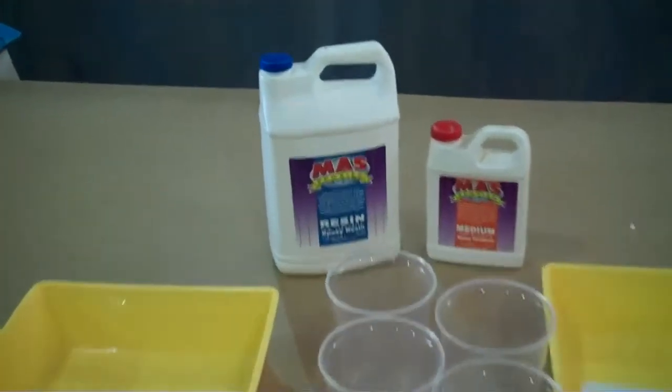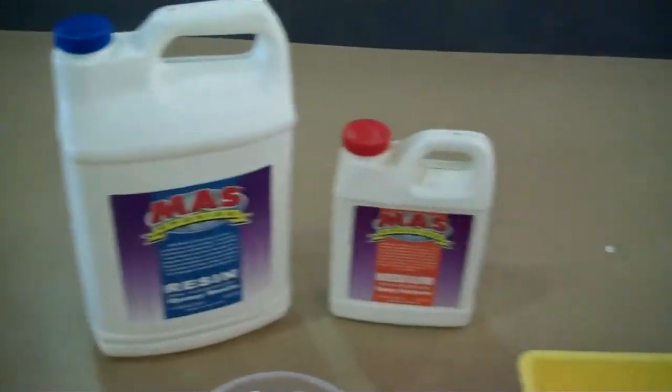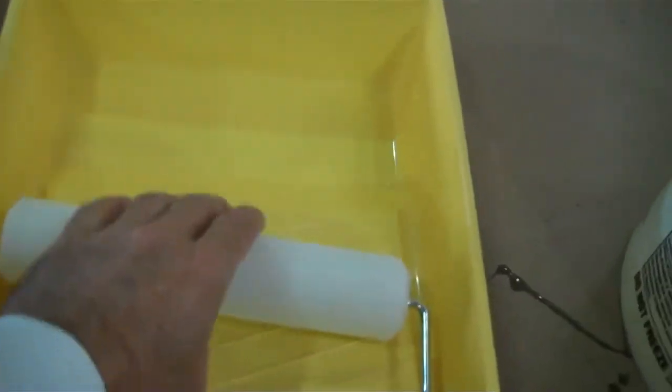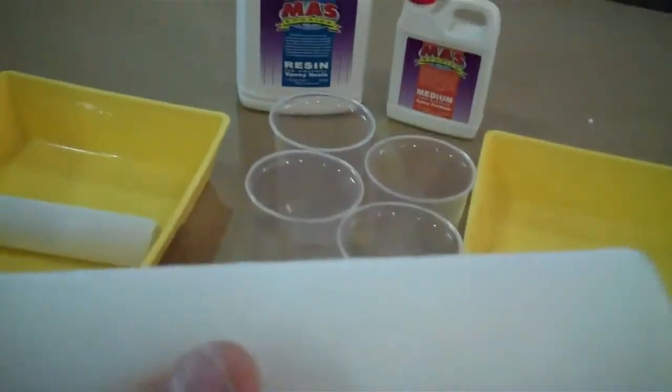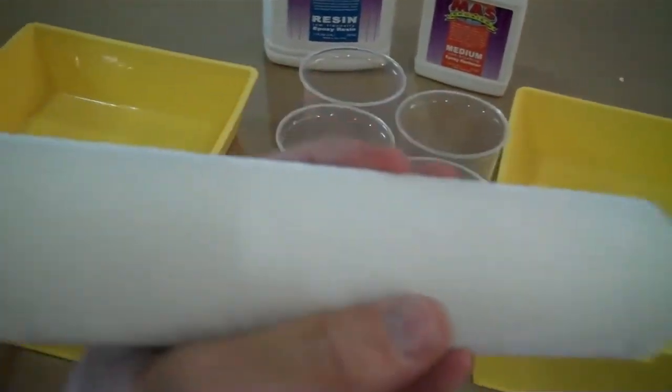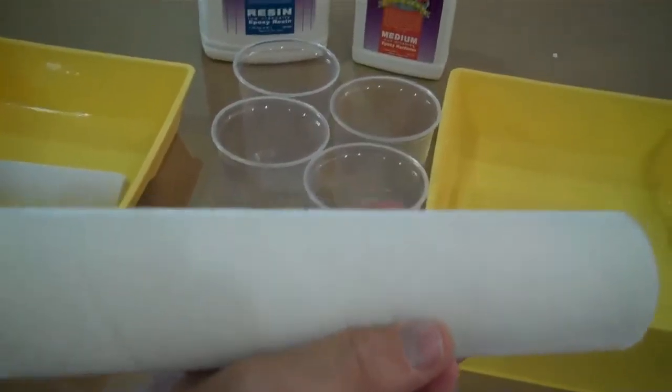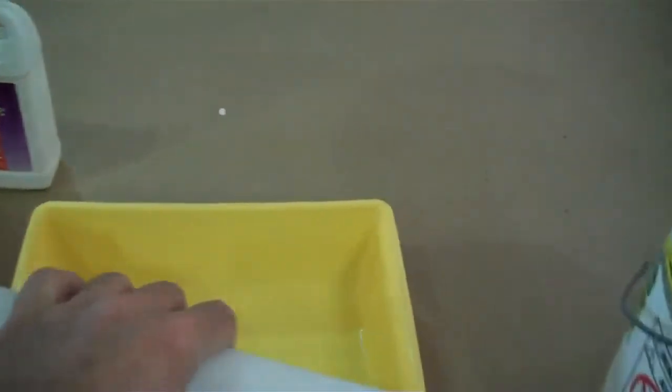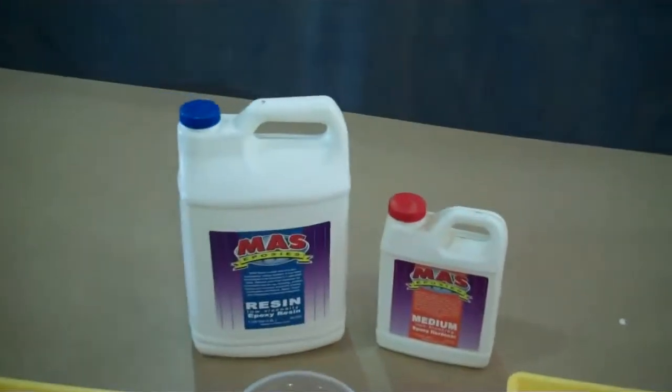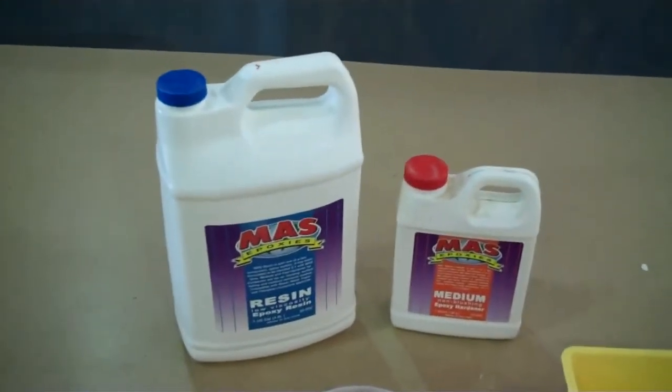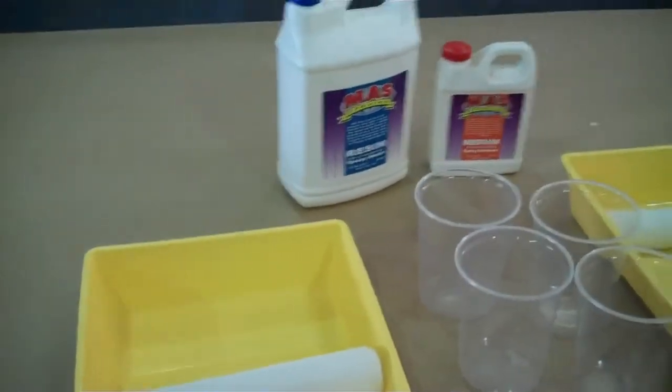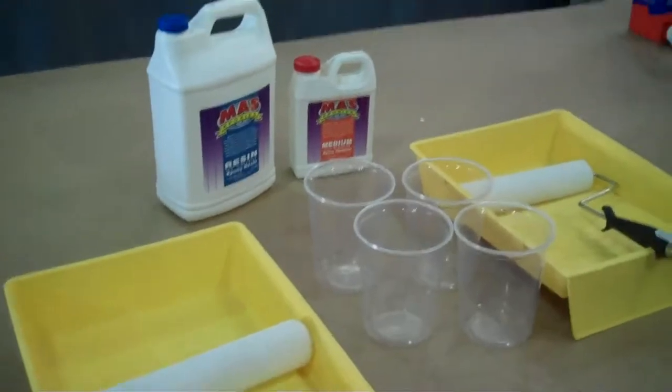We're going to use low viscosity resin and medium hardener today. We've got a couple of pans set up with nylon bristle rollers. It's a very different roller that'll hold a lot of resin and won't create a lot of air bubbles like foam rollers do. We're going to mix the resin two to one with the hardener, giving us about 40 minutes in one of these pans.